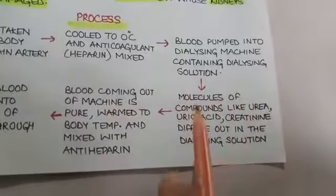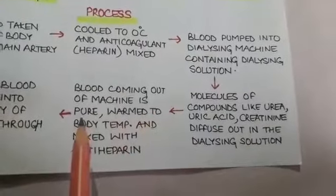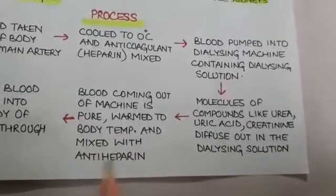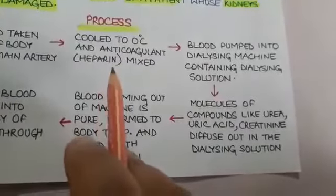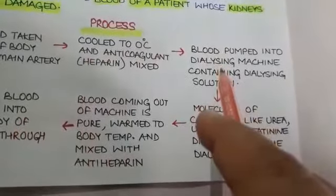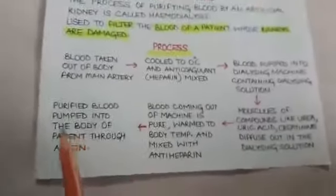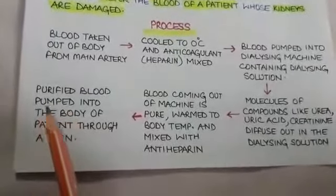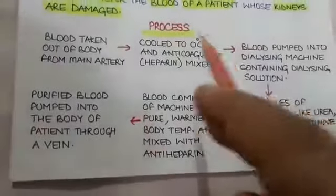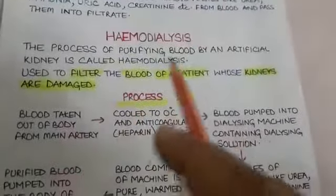After the blood has passed through the dialyzing machine, the blood that comes out is pure and filtered. It is warmed to body temperature of 37 degrees Celsius and mixed with anti-heparin to reduce the effect of the heparin that was added earlier. Once warmed and mixed with anti-heparin, it is pumped back into the body through a vein. This is the process of filtration of blood through hemodialysis.